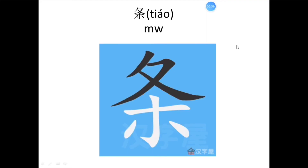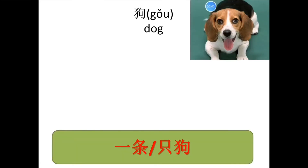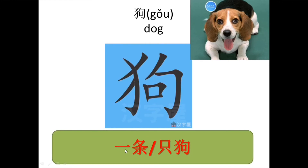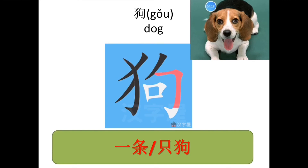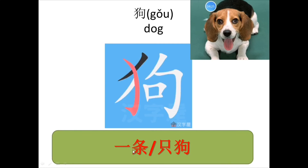Let's go on. What's this animal? You must very like it. 请你跟我一起读。 Let's read together. 狗。狗。 What's the measure word for 狗？ We usually say 一条狗。